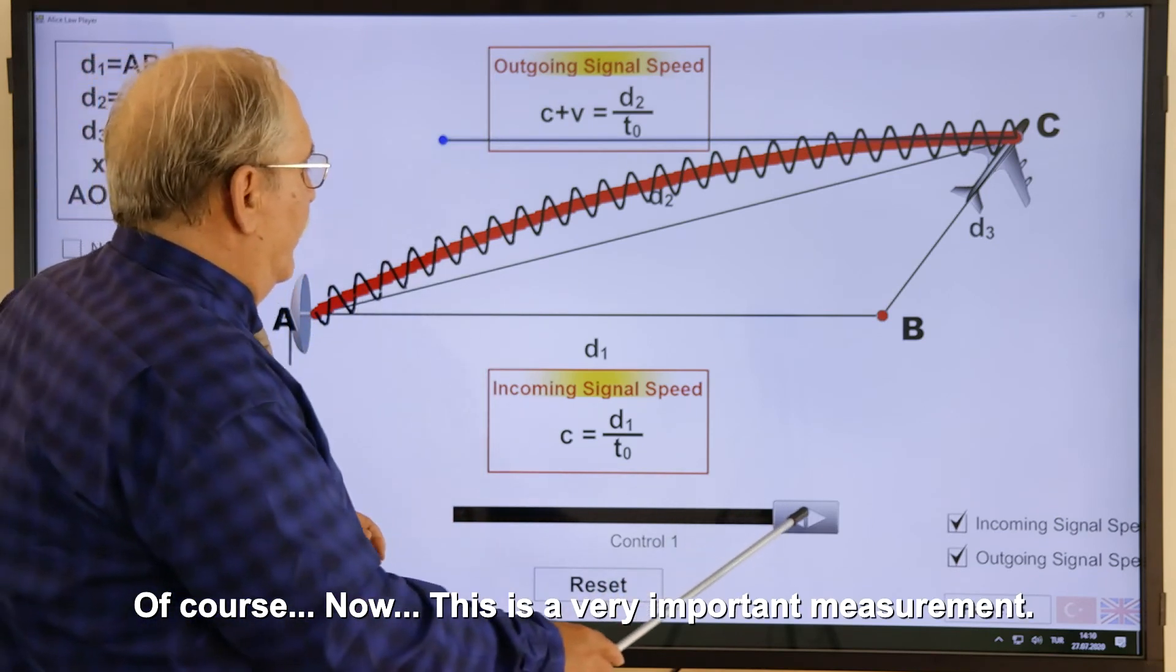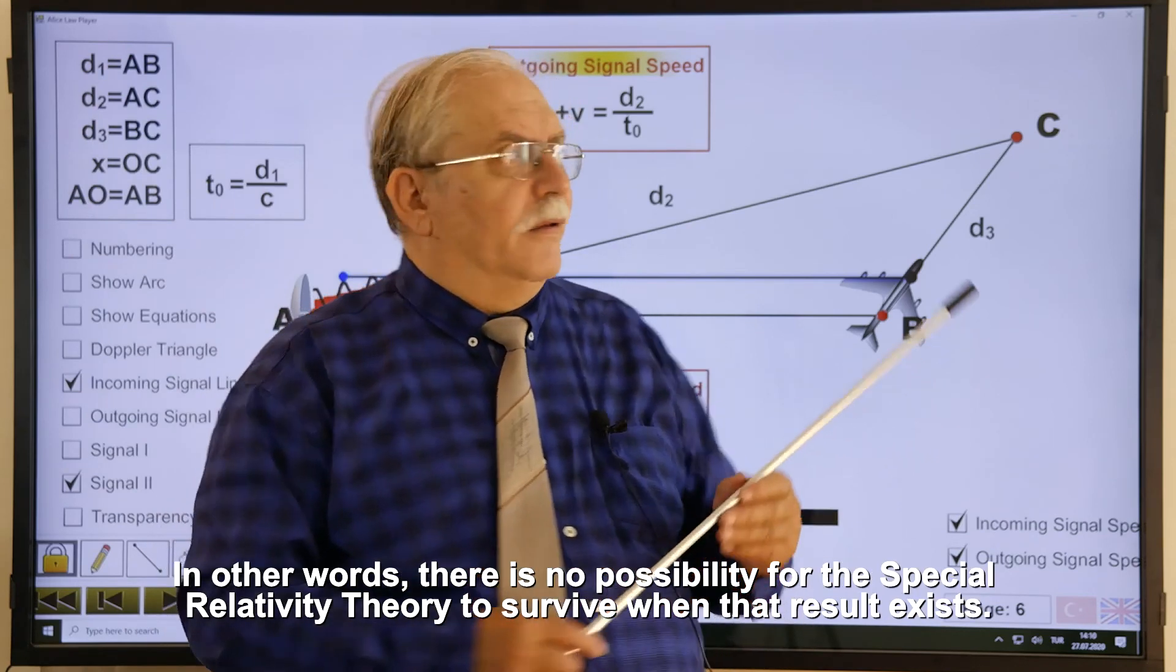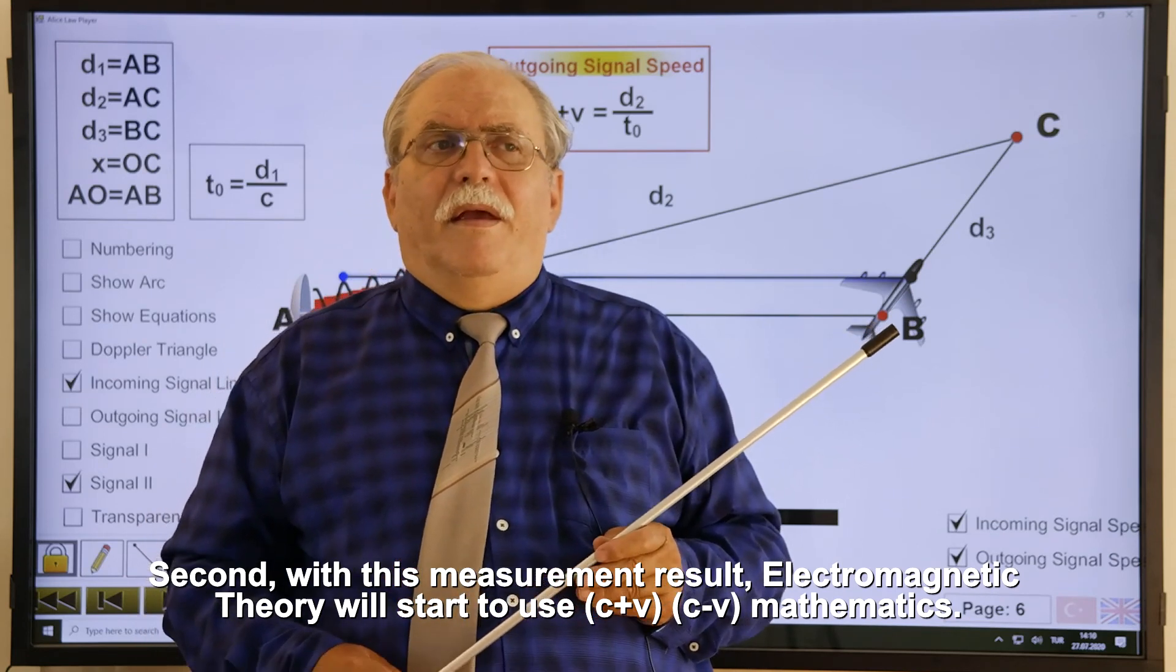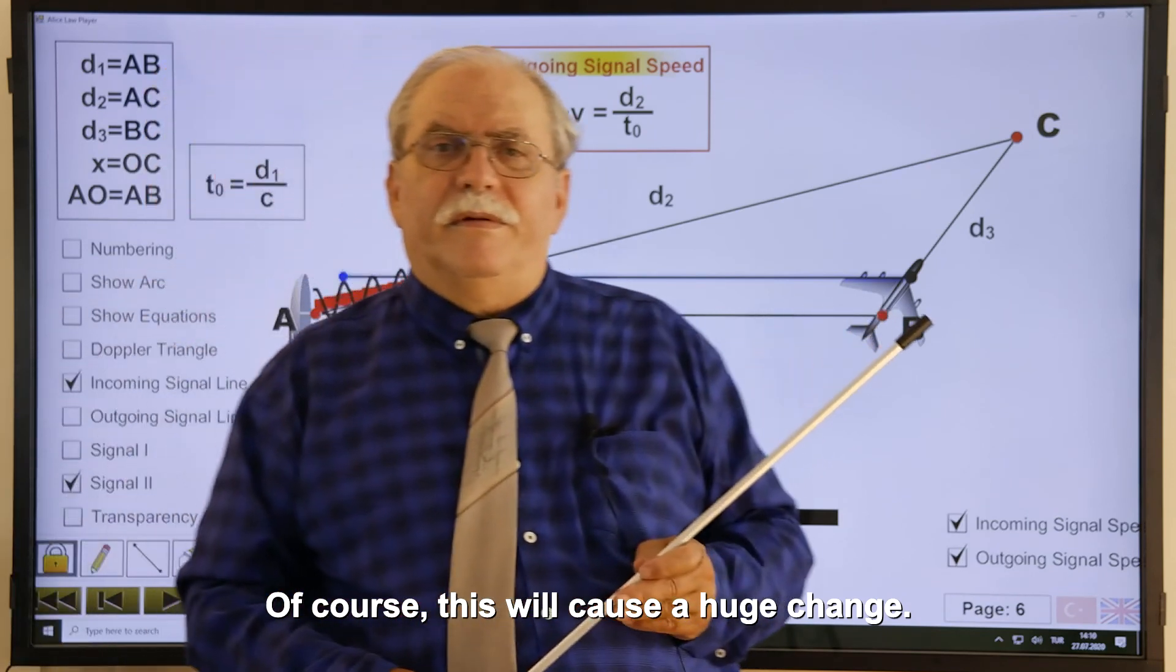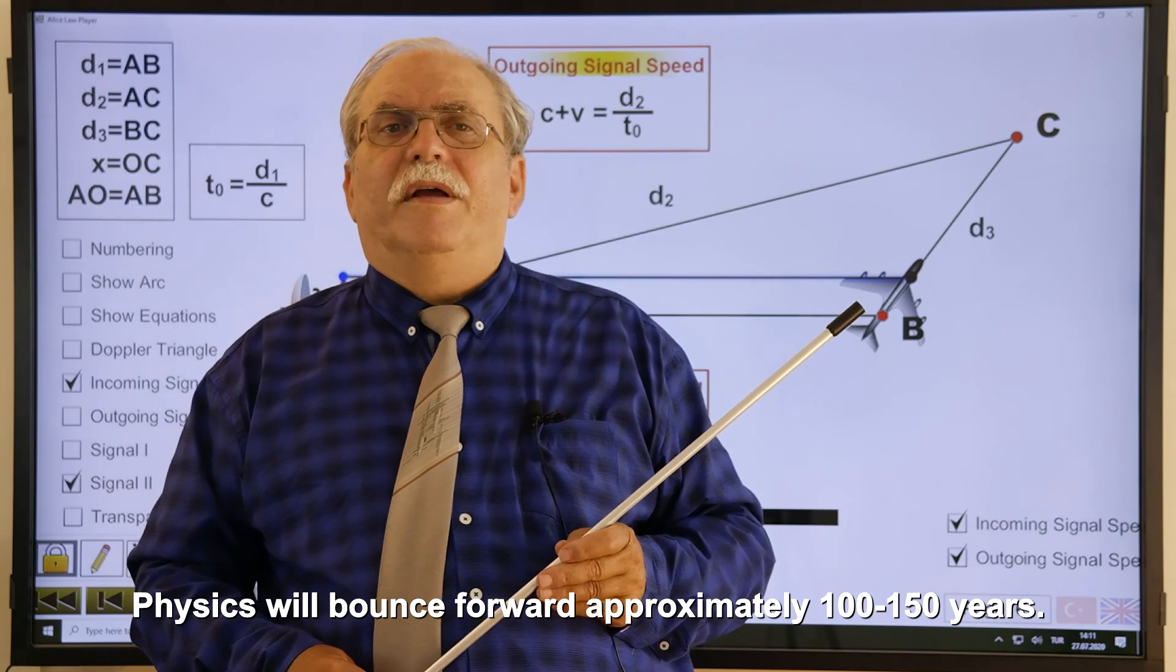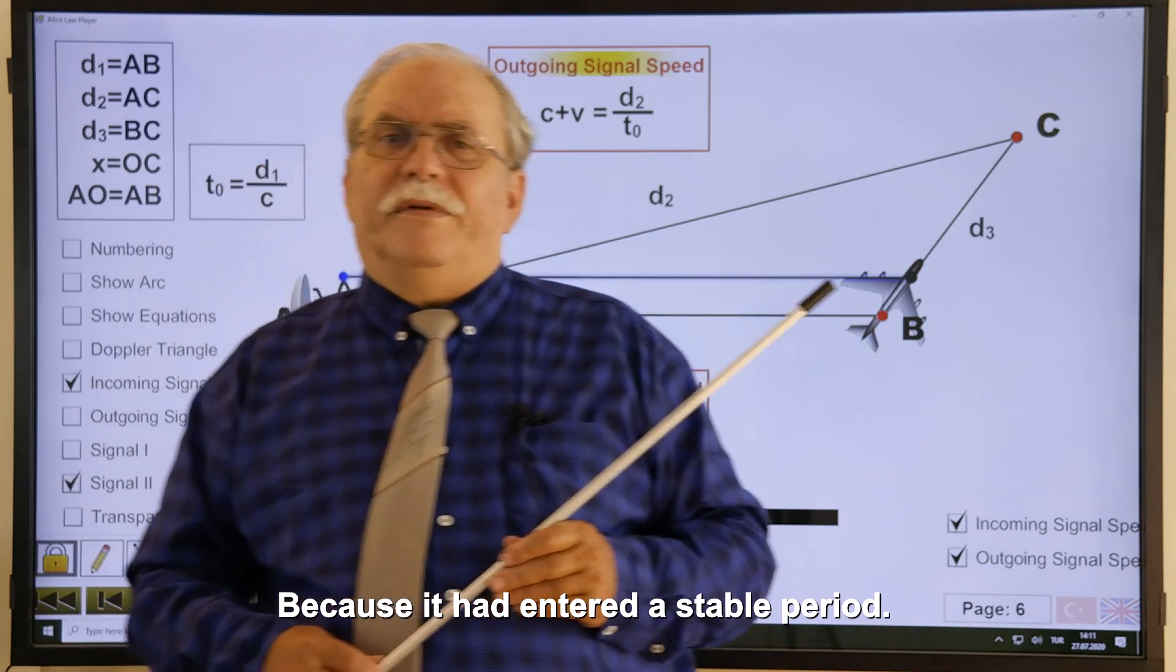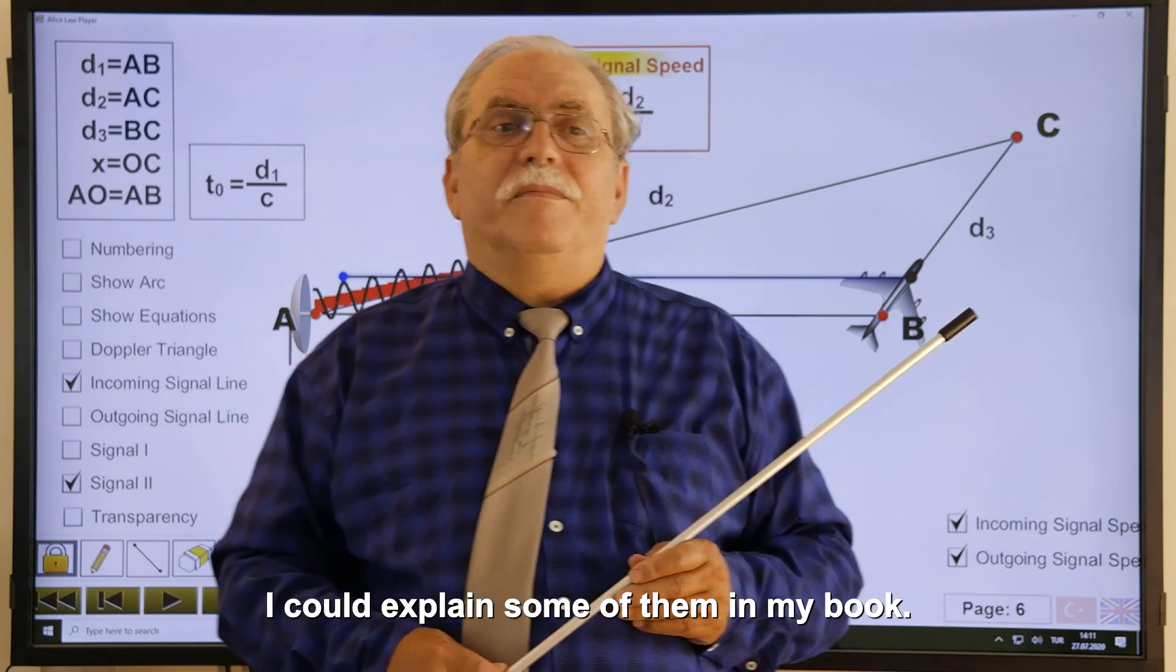Of course, now, this is a very important measurement. Because when this is done, first of all, the special relativity theory disappears. In other words, there is no possibility for the special relativity theory to survive when that result exists. Second, with this measurement result, electromagnetic theory will start to use C plus V, C minus V mathematics. Of course, this will cause a huge change. But the real big change will be in the theory of physics and the perspective of physics. Physics will bounce forward approximately 100 to 150 years. Because it had entered a stable period. There are very rich theoretical results in Alice Law. I could explain some of them in my book.